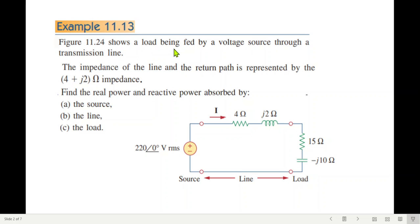The figure shows a load being fed by a voltage source through a transmission line. This is the load, this is the voltage source, and it is fed by the transmission line. The impedance of the line and the return path is represented by 4 plus j2. So this is the total line impedance. We have to find the real power and the reactive power absorbed by the source, the line, and the load.